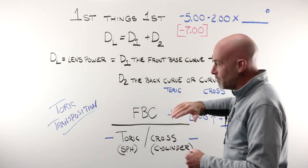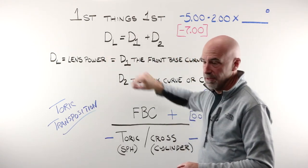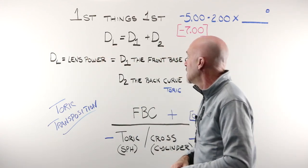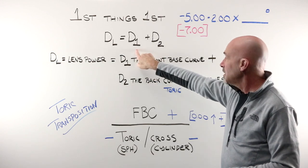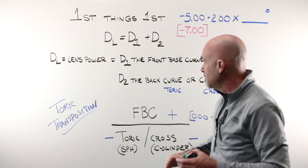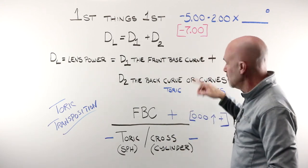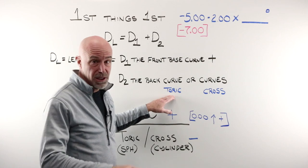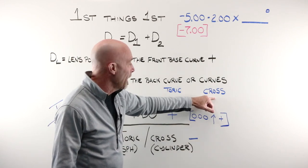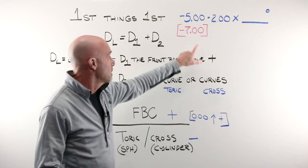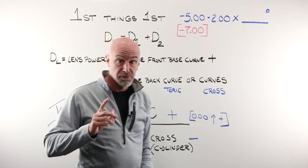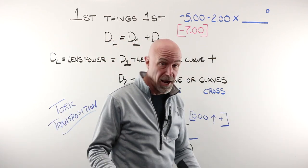The nominal lens formula is this: it tells us that the power of a lens, DL, is equal to the front base curve, the curve that is on the front of the lens, added to the back curve, in the case of a spherical lens, or the back curve combined with a second curve for a sphero-cylinder lens used to correct for astigmatism. It's gonna have two curves on the back.